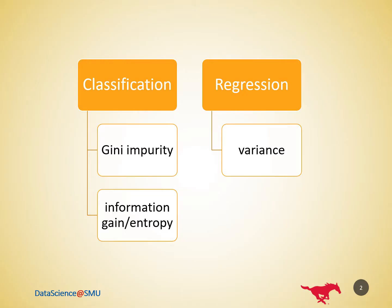When training a tree, it is possible to compute how much each feature decreases the impurity. The more a feature decreases the impurity, the more important the feature is. In random forest, the impurity decrease from each feature can be averaged across trees to determine the final importance of the variable.